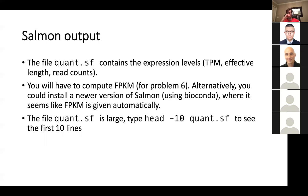So what is Salmon output? It's going to output a whole directory, but one of the files in this directory is called quant.sf and it contains the expression levels, TPM, effective length, and then just read counts. So I actually have to compute FPKM because the version that we have isn't going to give you FPKM. Alternatively, you could try to install a newer version of Salmon where it looks like FPKM is automatically given to you. But the formula is not too complicated, so I'd recommend just computing FPKM from the read counts and the effective length.